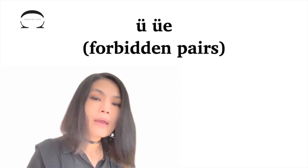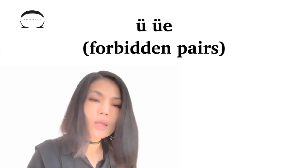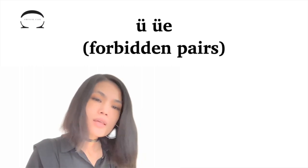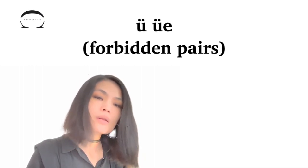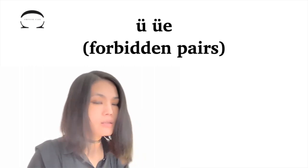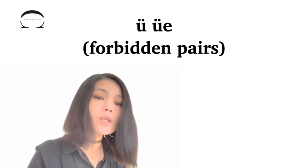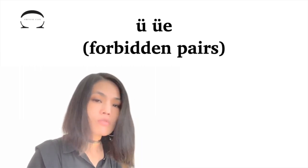Today's case is the forbidden pairs regarding the finals ü and üe. To keep things simple, I'm using the English names for the spelling letters. However, because there isn't an English counterpart for the Chinese vowel letter ü, I'm using its Chinese name for this letter.